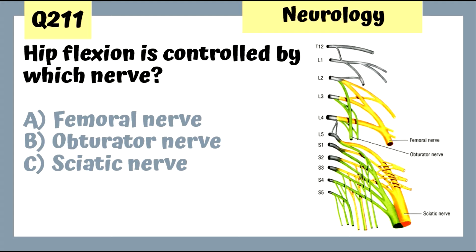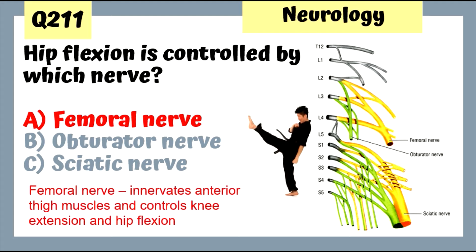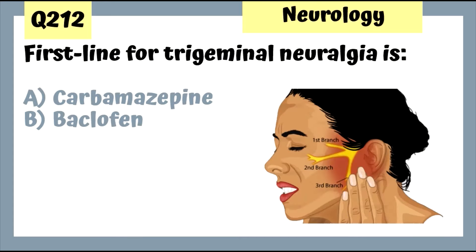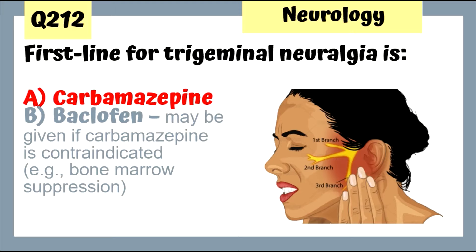Question 211: Hip flexion is controlled by the femoral nerve, which is also involved in knee extension — both movements controlled by the femoral nerve. Question 212: First-line treatment for trigeminal neuralgia is carbamazepine or oxcarbazepine. Baclofen is not first-line treatment; it may be given if carbamazepine is contraindicated, for example in bone marrow suppression.